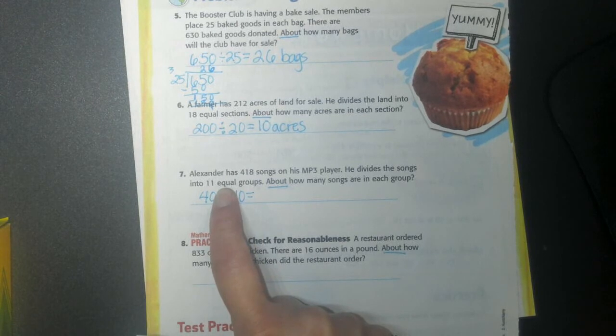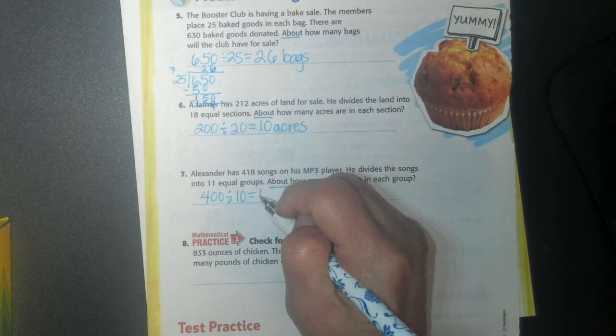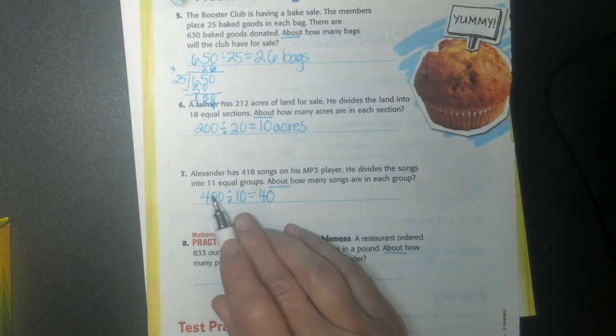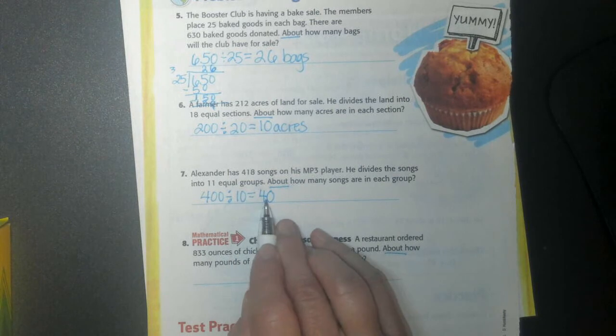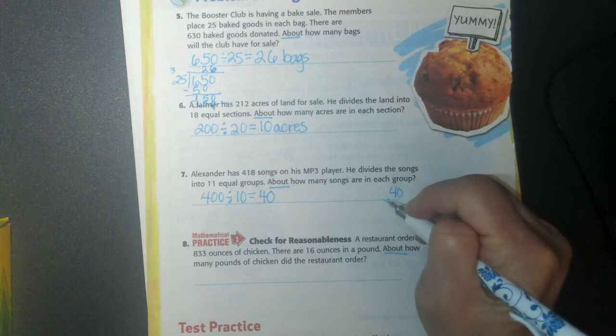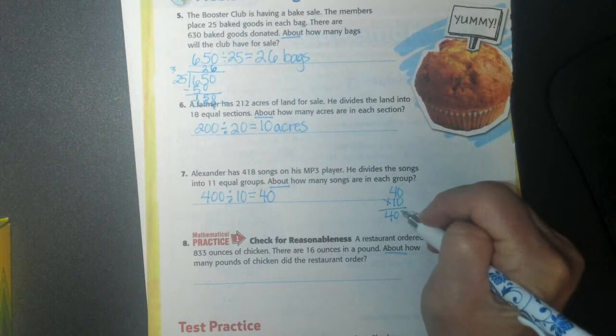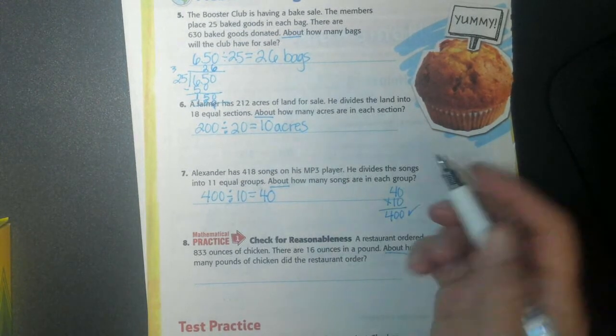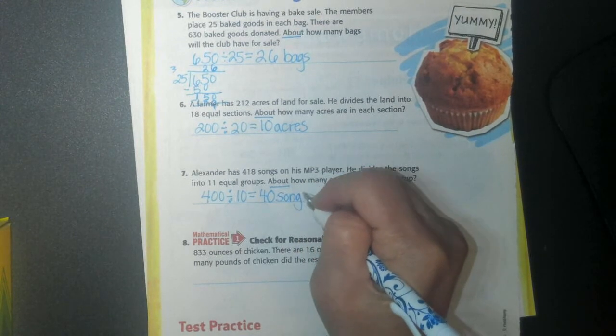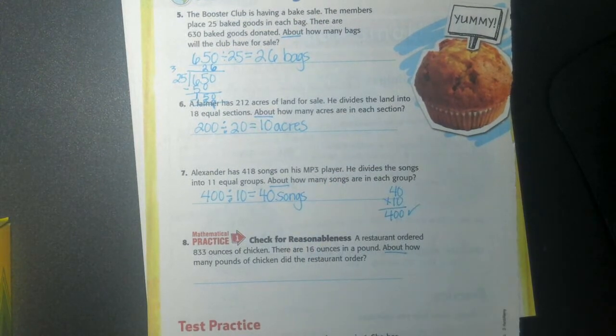So now I'm going to hide my 0 here for a minute. 40 divided by 10. So if I have 40, 4. So if I have 40, I divide it up in 10, I have 4. And then I have to put my 0 back there. So 400 divided by 10 equals 40. You could double check this by saying, is 40 times 10 400? Yes. And he has about 40 songs in each group.